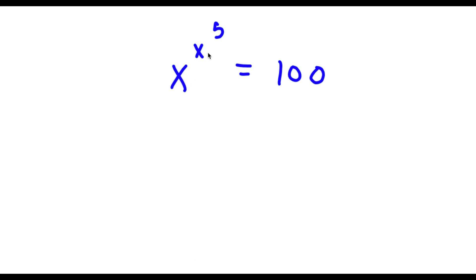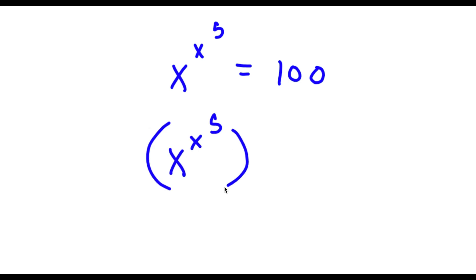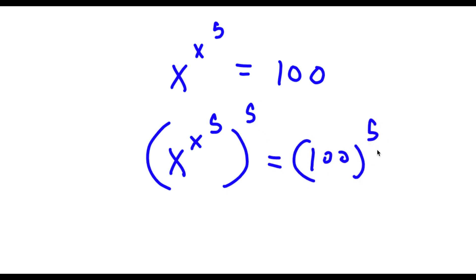So I have x to the power of x to the power of 5 is equal to 100. The first thing I'm going to do is take the power of 5 on both sides. So now I have x to the power of x to the power of 5, all to the power of 5, is equal to 100 to the power of 5.